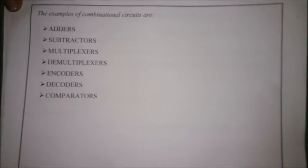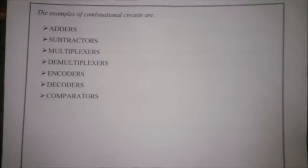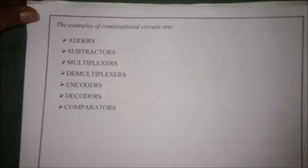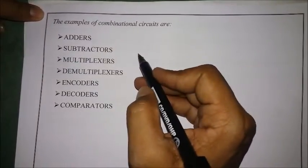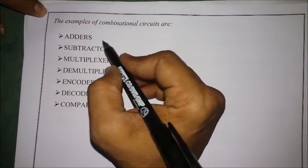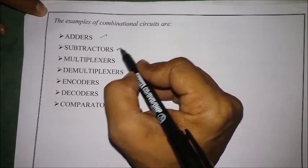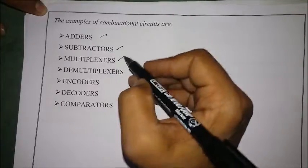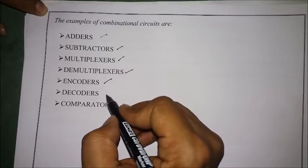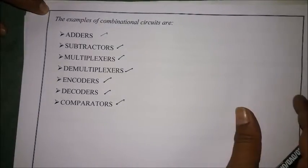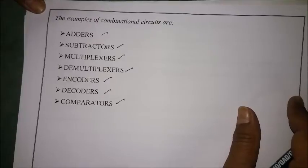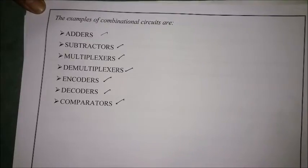We have many examples of combinational circuits, which we will discuss in the next lectures. The examples include adders, subtractors, multiplexers, demultiplexers, encoders, decoders, and comparators. These are the key examples of combinational circuits, and now we are going to look at how to design them.